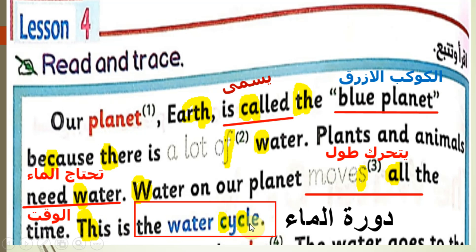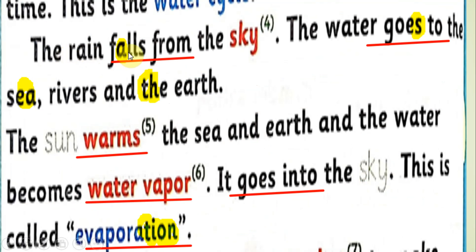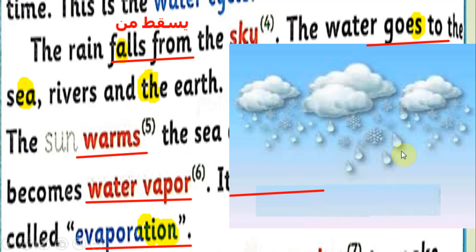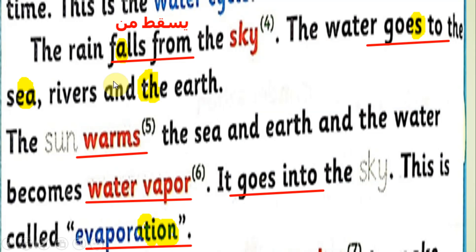'The rain falls from the sky' — rain المطر, falls يسقط, from من, sky السماء. Note the A in 'falls' has an O sound. As you can see in the picture, rain falls from the sky. 'The water goes to the sea' — goes يذهب, note the S in 'goes' is pronounced as Z. The sea البحر — we took this word last term.